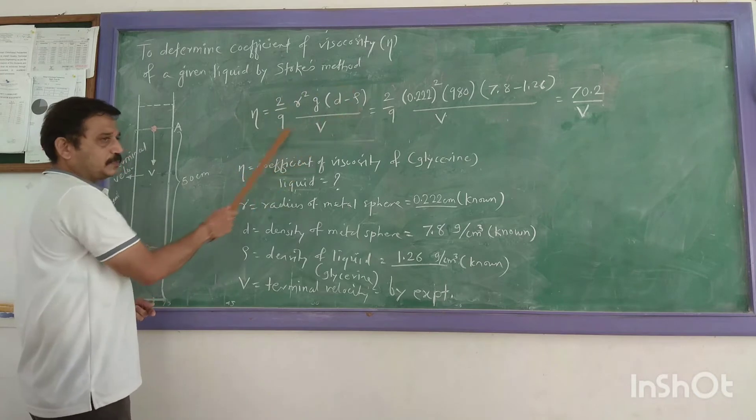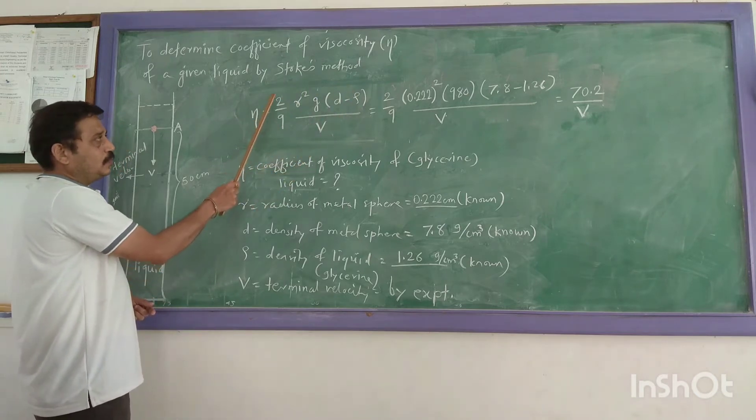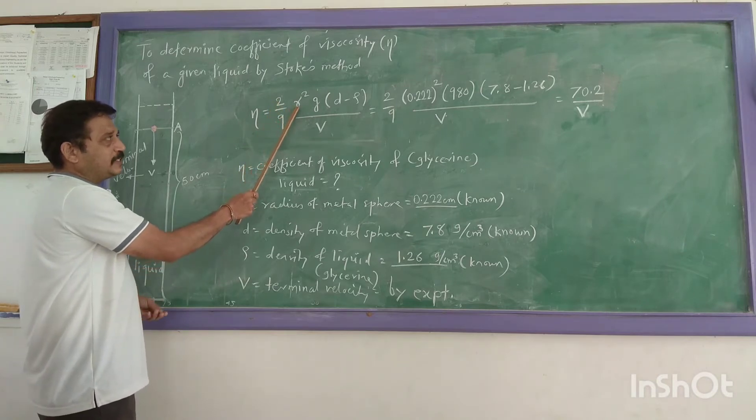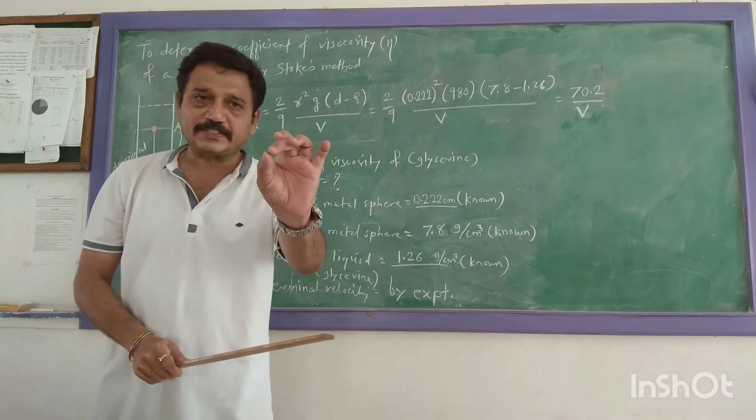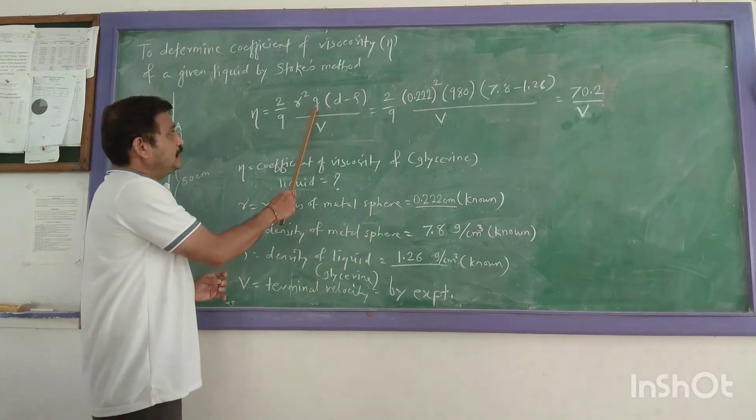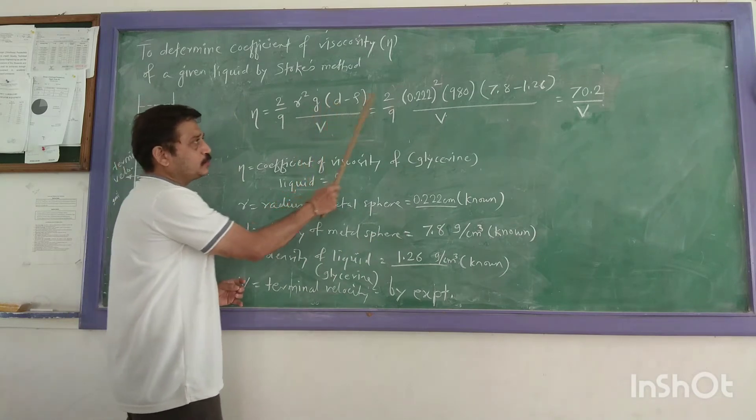This is the formula we are going to use: coefficient of viscosity η equals 2/9. R is the radius of the metal sphere. This is known to us. I have already measured the diameter. g is the gravitational acceleration. D is the density of the metal, which is also known to us.